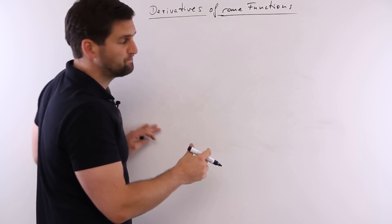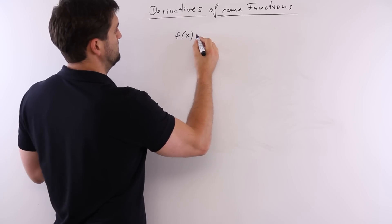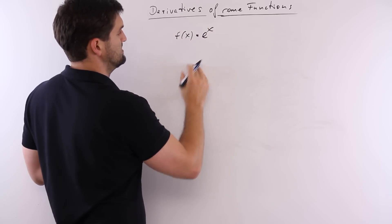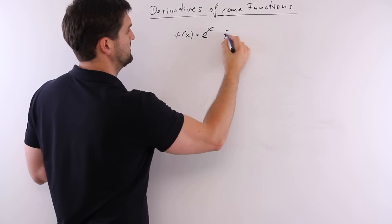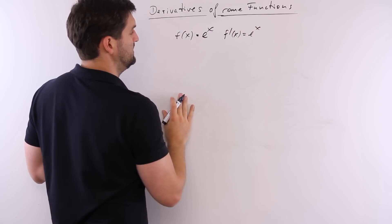So, some derivatives. For example, f(x) equals e to the x. That's a beautiful function. f prime, the derivative, would be e to the power of x.